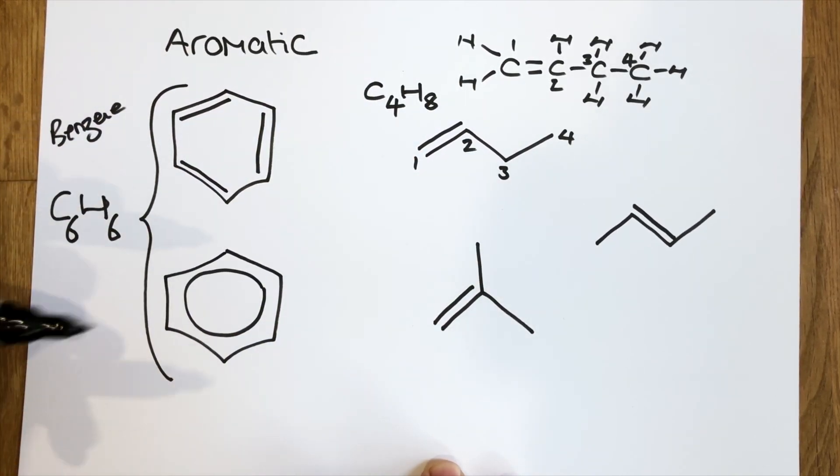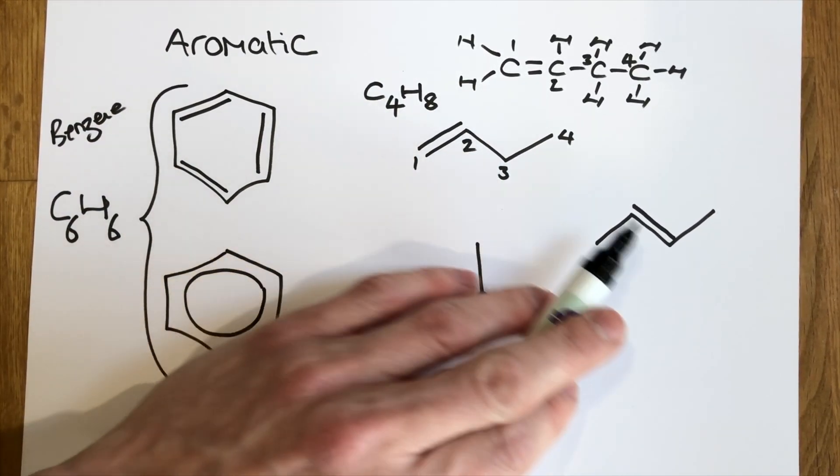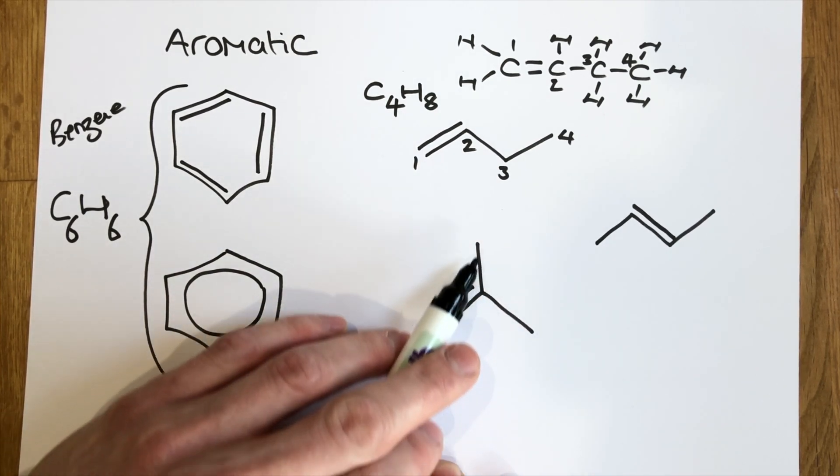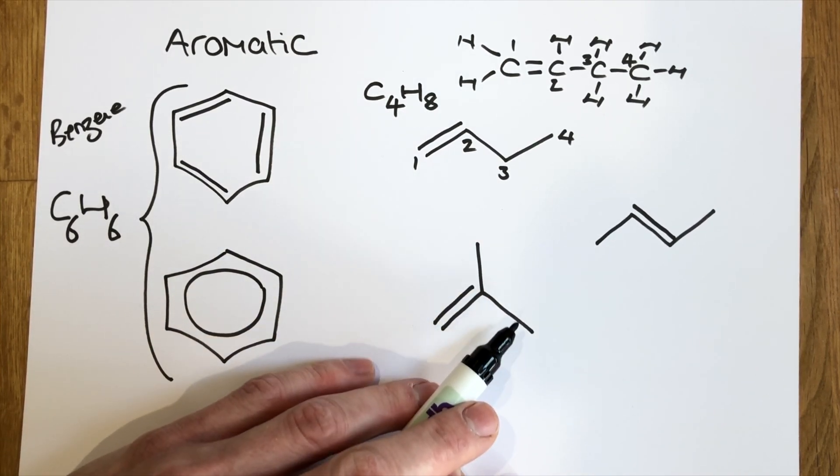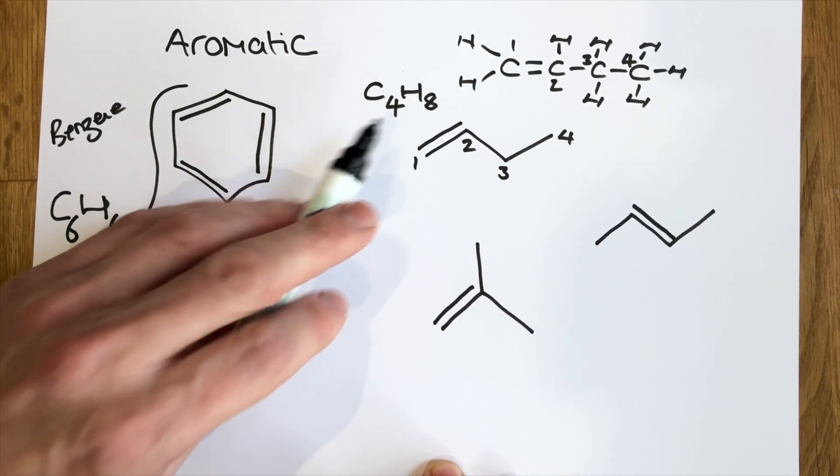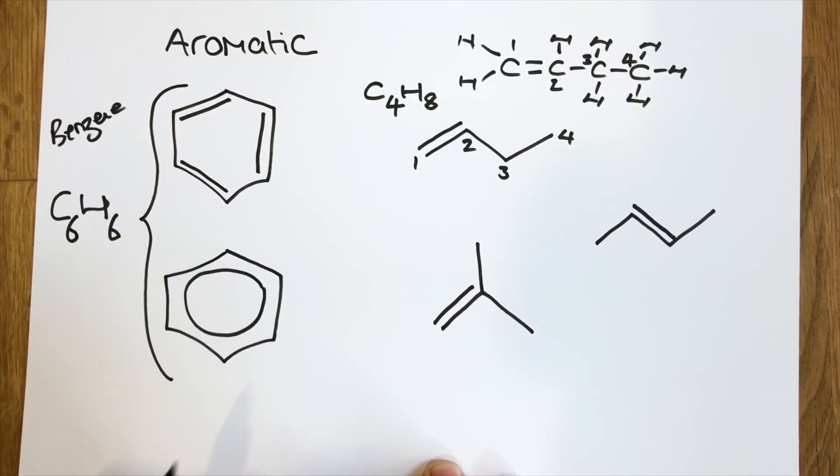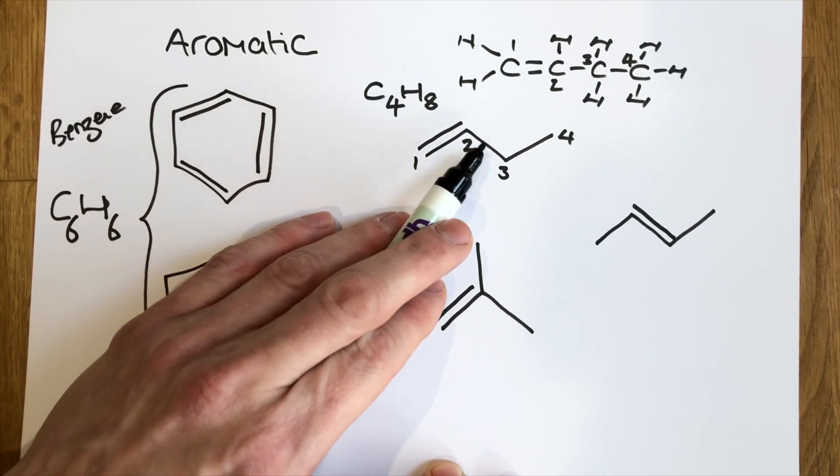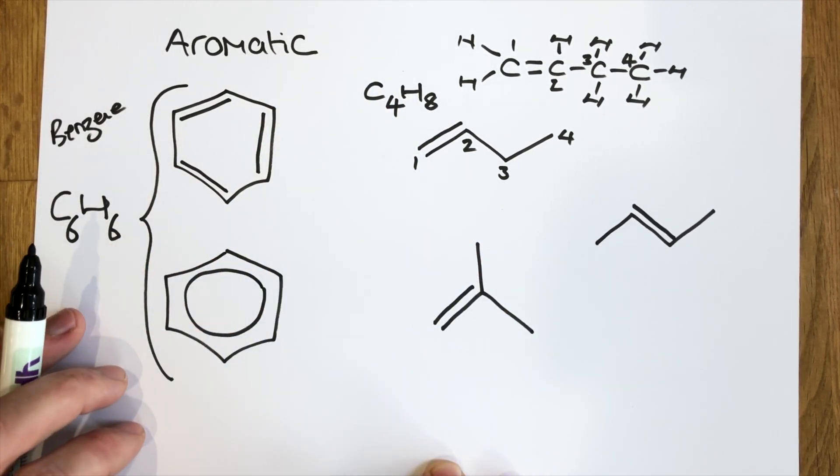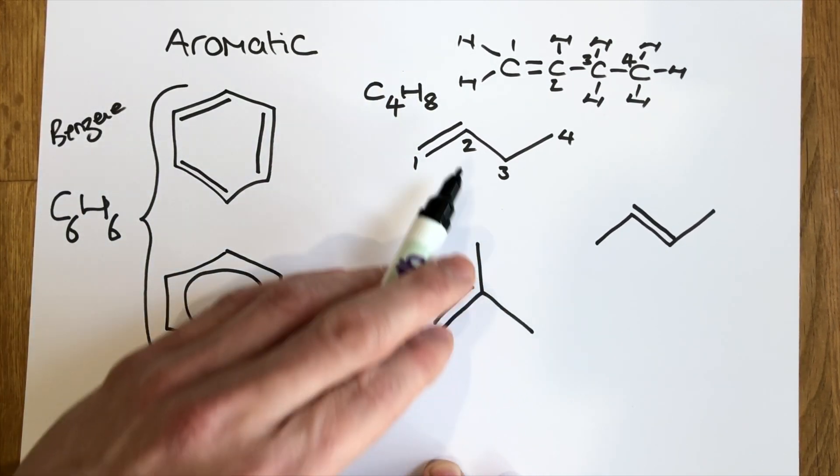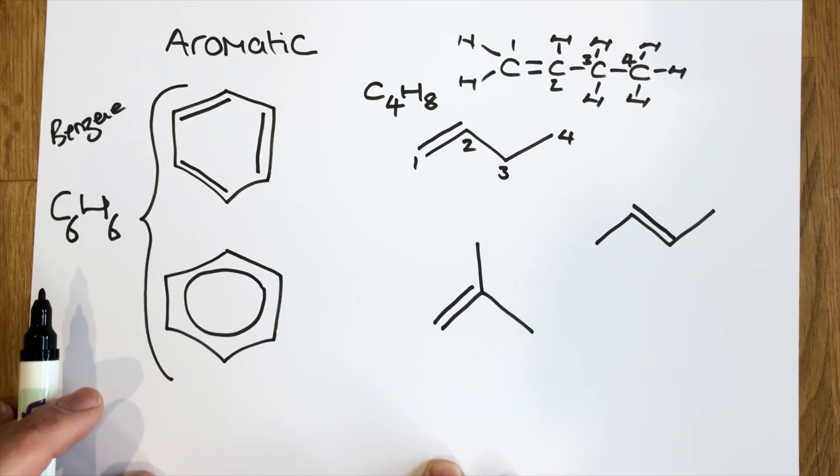And that's because these three structures, although they have very different names, they are all structural isomers of each other. They all have the same molecular formula, but different structural formula. They are also all unsaturated. That means they contain at least one carbon-carbon double bond. They are also all, including the aromatics, hydrocarbons, which means they contain carbon and hydrogen only.